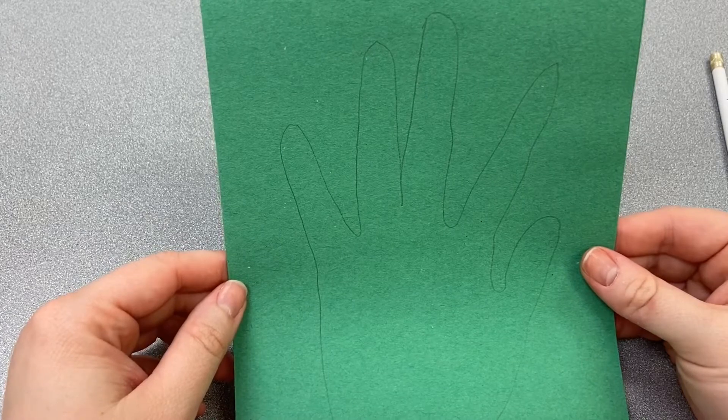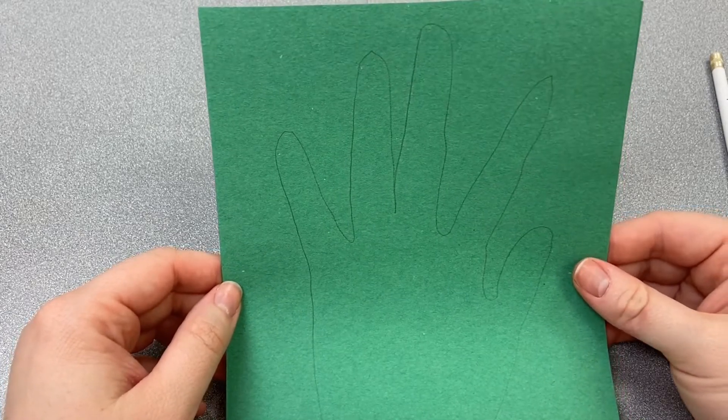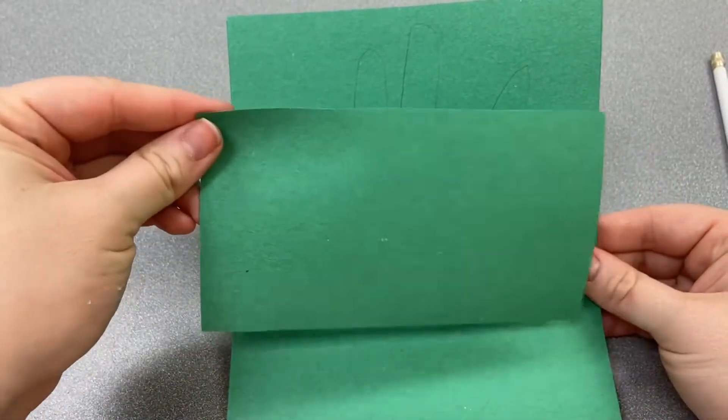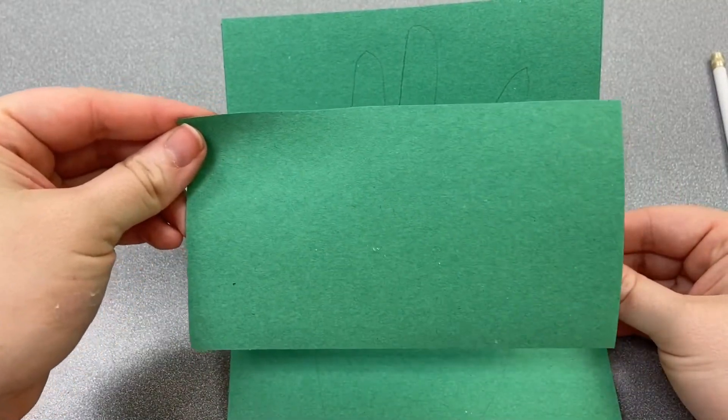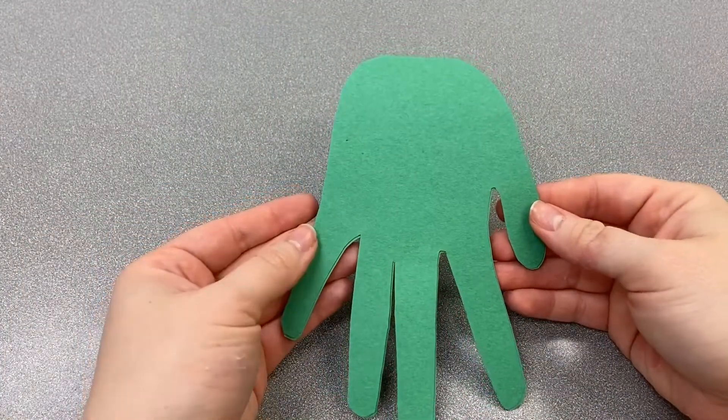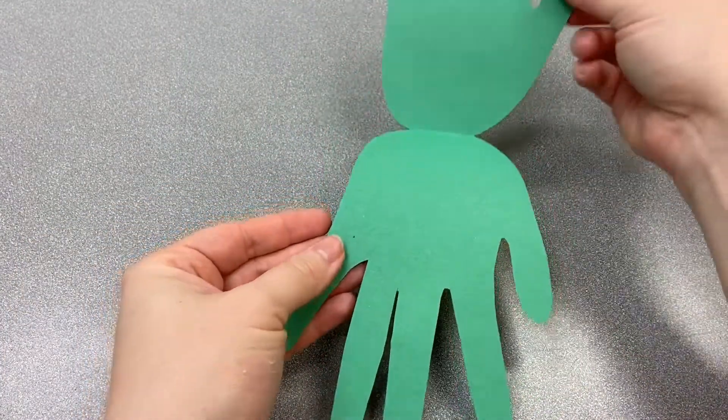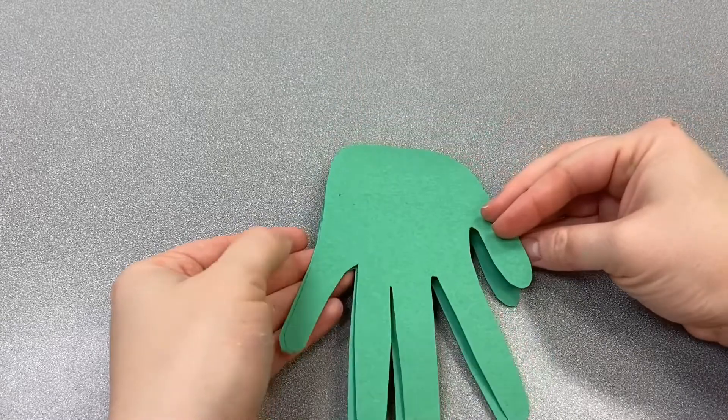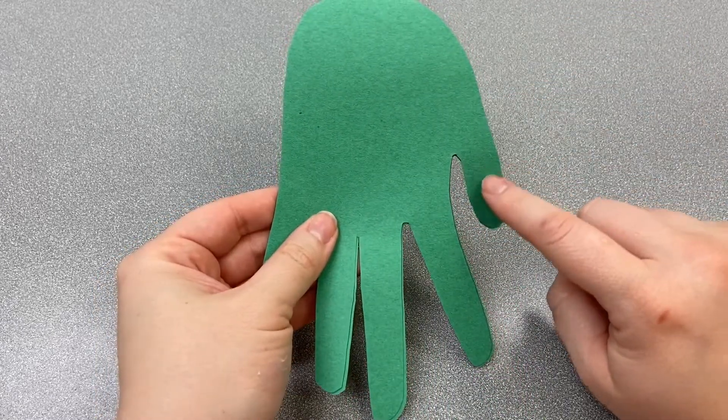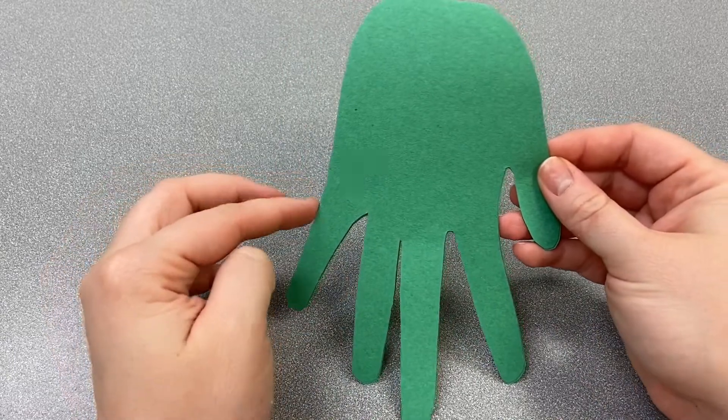When you're finished cutting, save any leftover green paper or if you have a larger sheet, make sure you have another little sheet about this size because we'll need it for another step. Your handprint should look like this once you cut it out. So you can open and close it and we're going to put your thumb on this side and your pinky finger on this side.